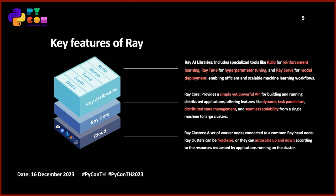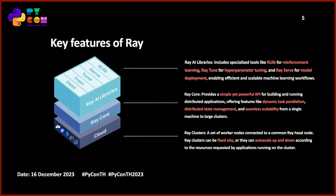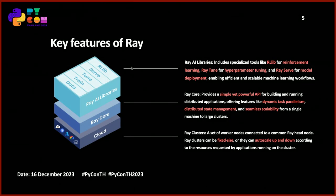Next is Ray Core — a simple, powerful API for building and running distributed applications. It offers features like dynamic task parallelism, distributed state management, and seamless scalability from a single machine to a large cluster. The last feature is the Ray Cluster, a set of worker nodes connected to a common Ray head node. The Ray Cluster can auto-scale up and down according to resource requests from applications running on it.